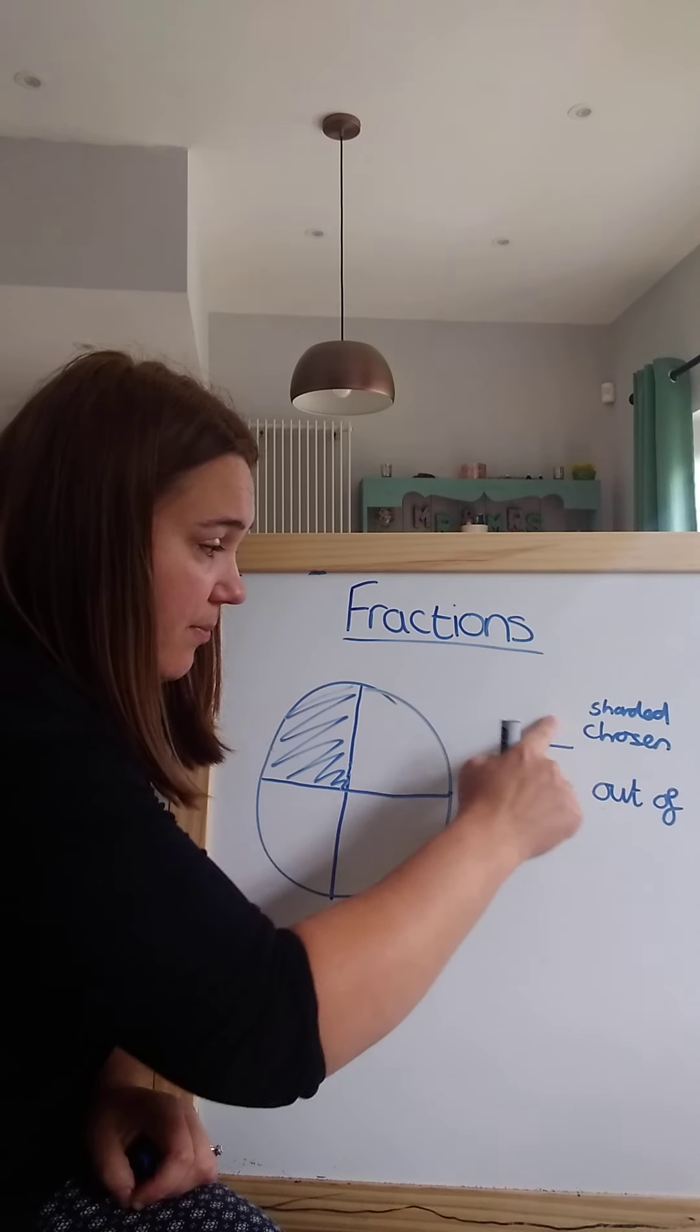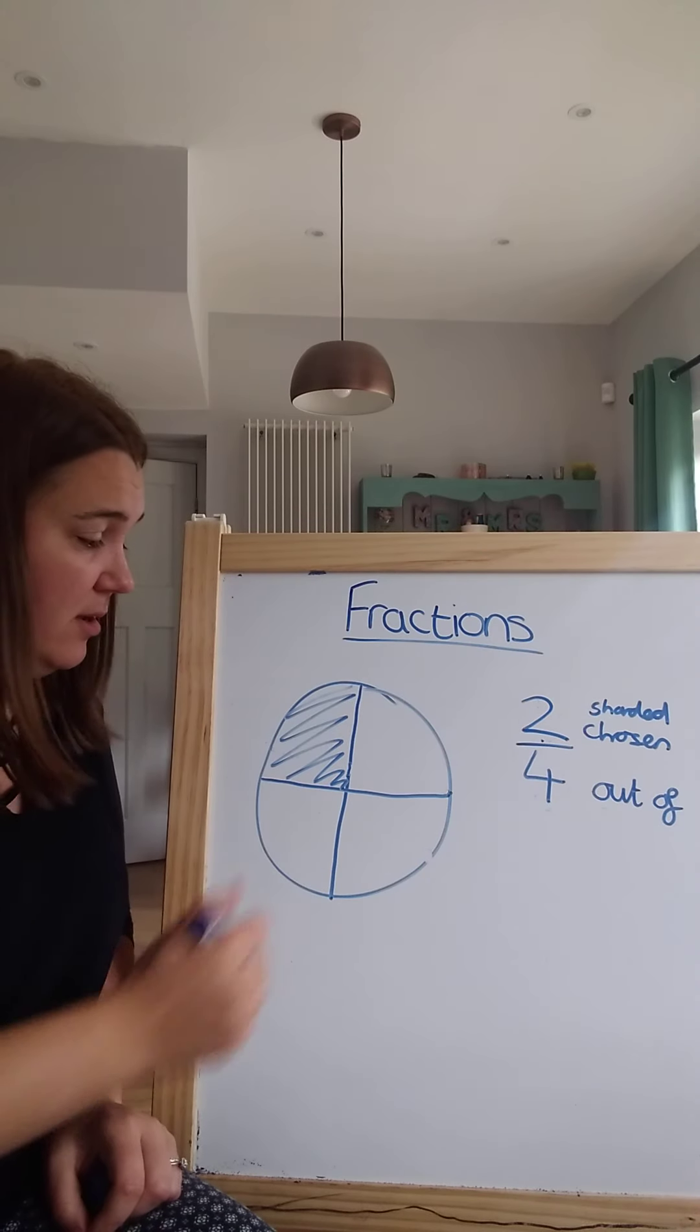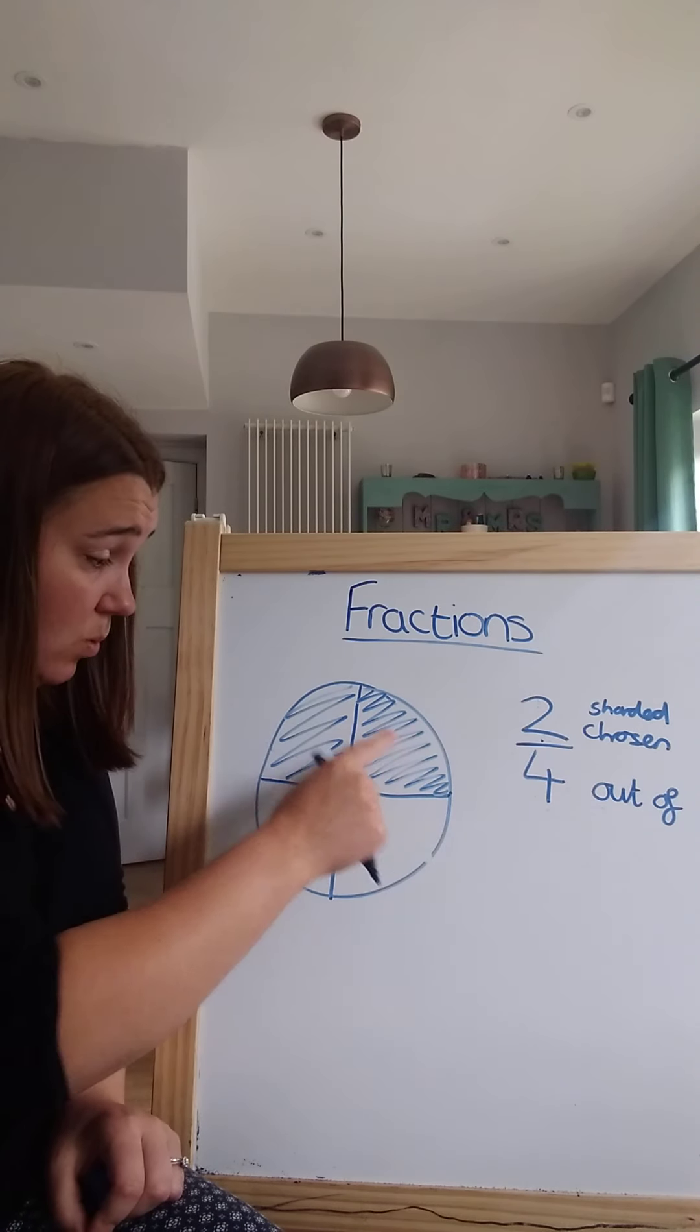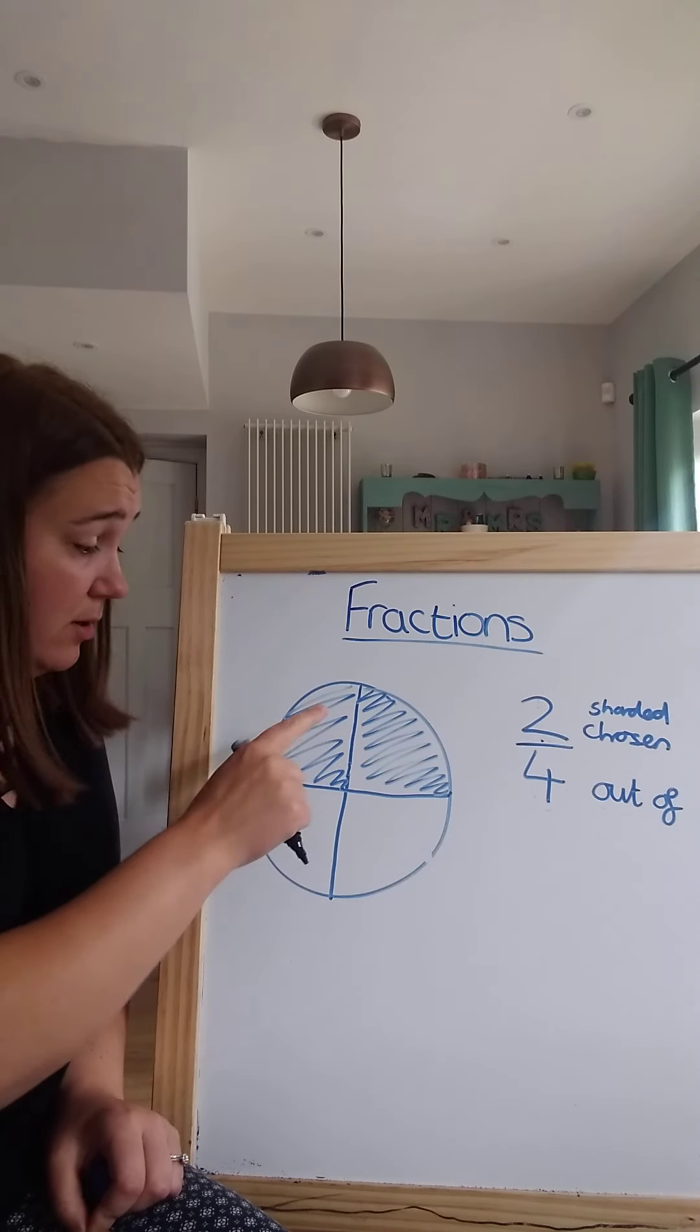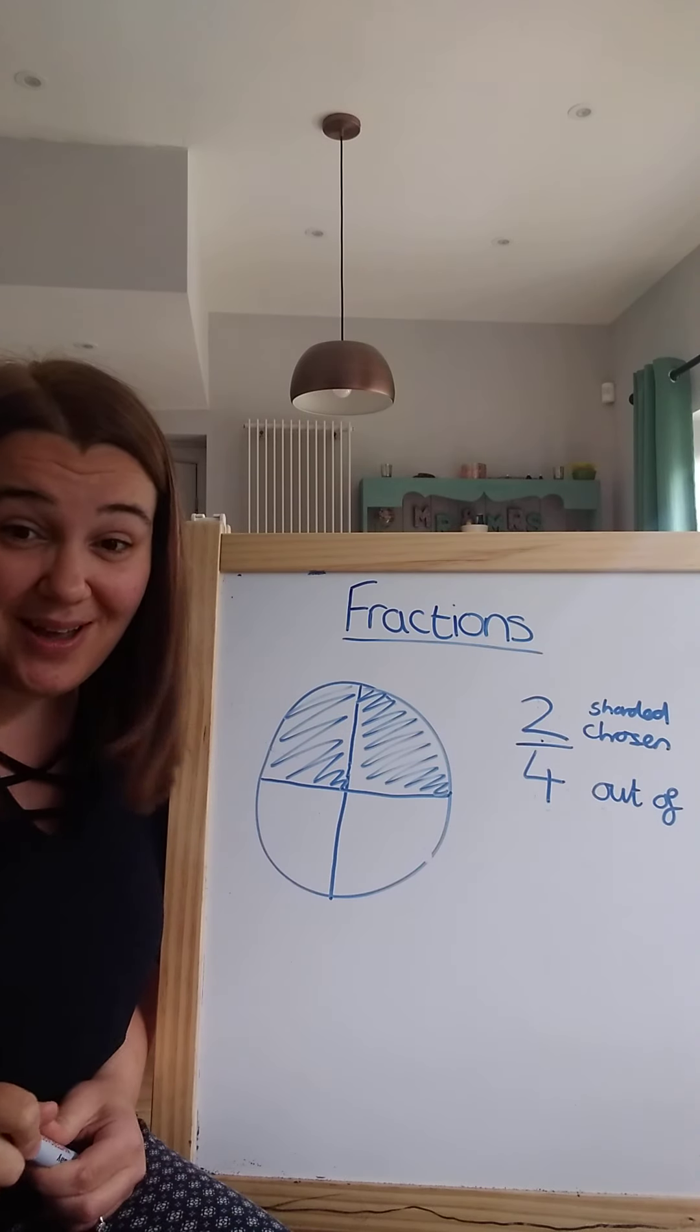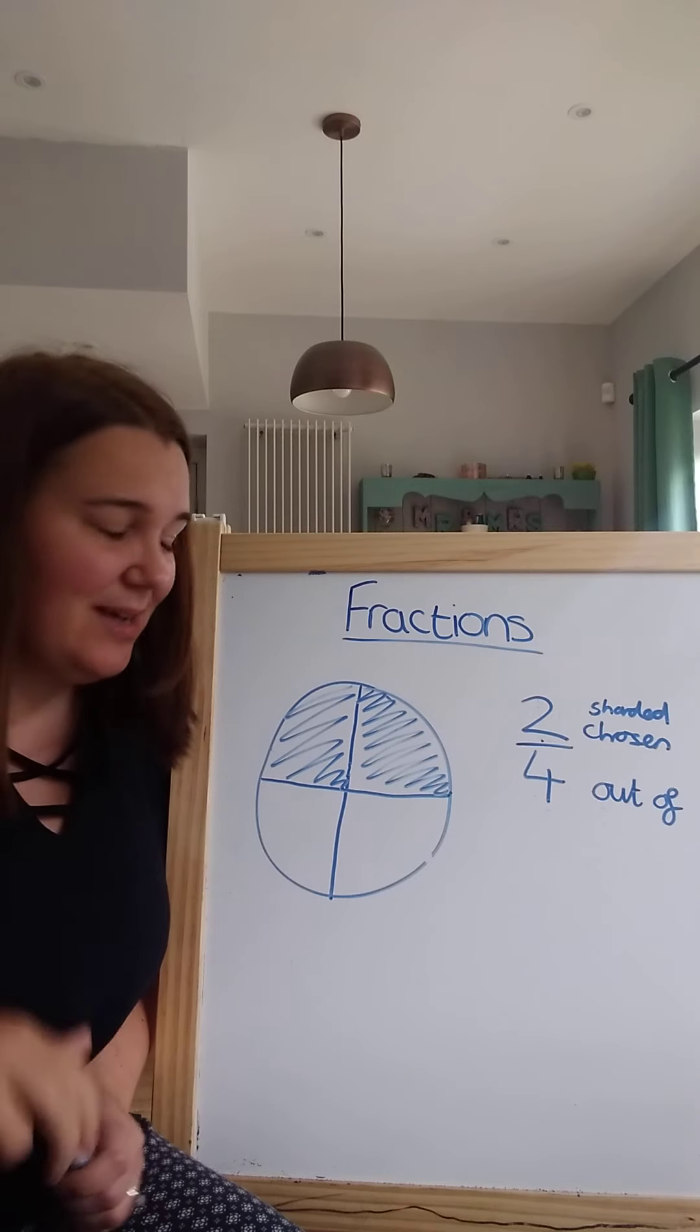And even if I change this number onto there, I could do this. Now I've got four pieces, one, two, three, four. Two of those pieces are shaded, one, two. Now some of you might notice that that also shows a half. That will come onto a little later on, but it's good just to see that, so well done if you did.